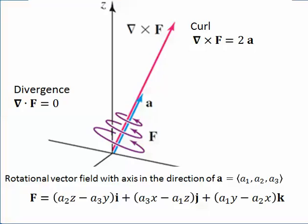So, we start with a vector a. We make, from that vector a, we make a rotation vector field. Now, its axis of the rotation vector field, its axis is in the direction of a. The curl of the vector field is twice of a.